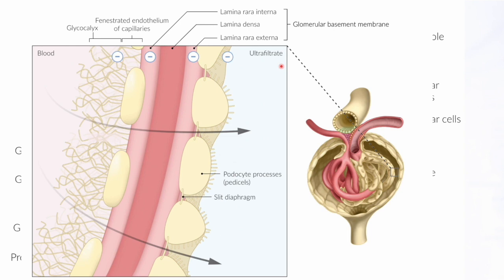This is important for understanding nephrotic syndrome. The basement membrane is negatively charged, and proteins in the blood are also negatively charged. So there is a natural repulsion within the glomerular barrier preventing proteins from escaping into the filtrate. No albumin or any other protein should be lost if this barrier is intact.